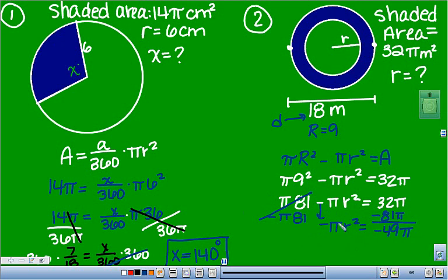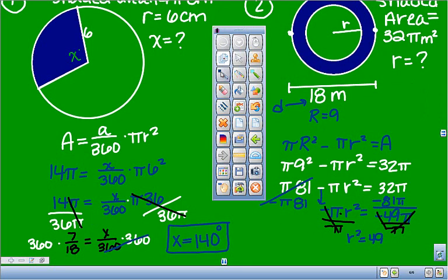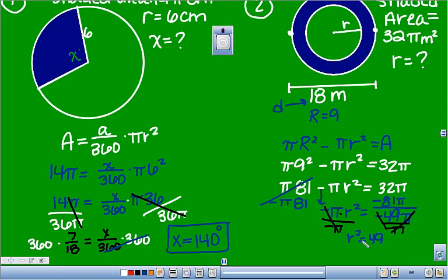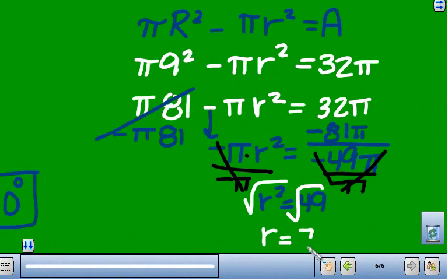So these negatives cancel each other out and these pi's cancel each other out. So you're left with r squared equals 49. And then I hope by now you know to get rid of a square, you do the opposite which is square root. So r is 7. And this was measured in meters.